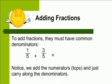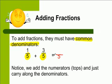When you add fractions, the most important thing to remember is that they must have common denominators — meaning they have to have the same denominator. You cannot add fractions with different numbers on the bottom. If they are the same, you add the numerators and just carry along the denominator. So the bottom number stays the same — here it's 5 — and we add the top: 1 plus 3 is 4. So 1 fifth plus 3 fifths is 4 fifths.